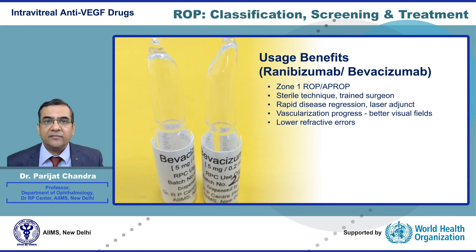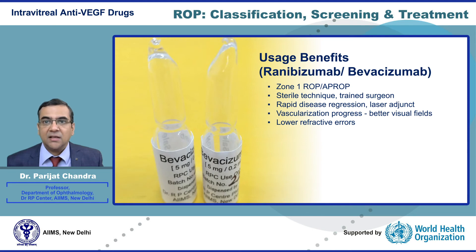Intravitreal anti-VEGF drugs like ranibizumab and bevacizumab are rapidly emerging as the first-line treatment of zone 1 ROP and APROP. They are injected using a sterile technique by a trained surgeon. They cause rapid disease regression and are a useful adjunct to laser treatment. A major advantage is that retinal vascularization continues into the periphery, eventually leading to better visual fields, and the resultant refractive error is also lower.